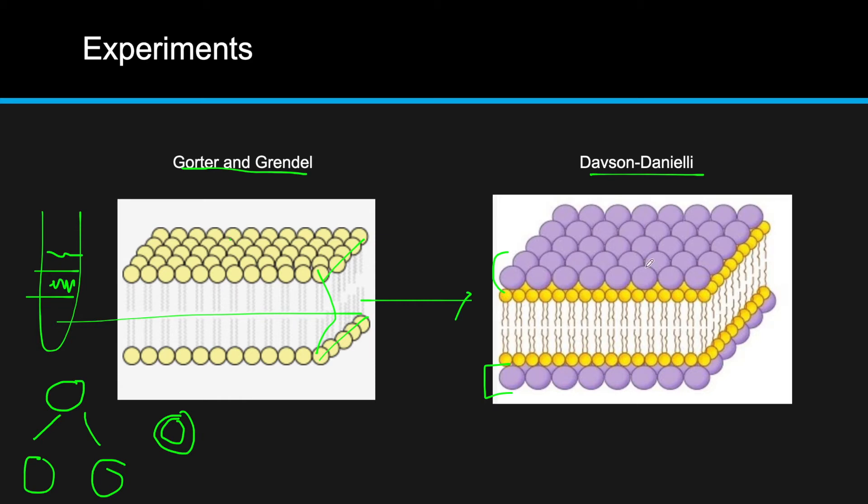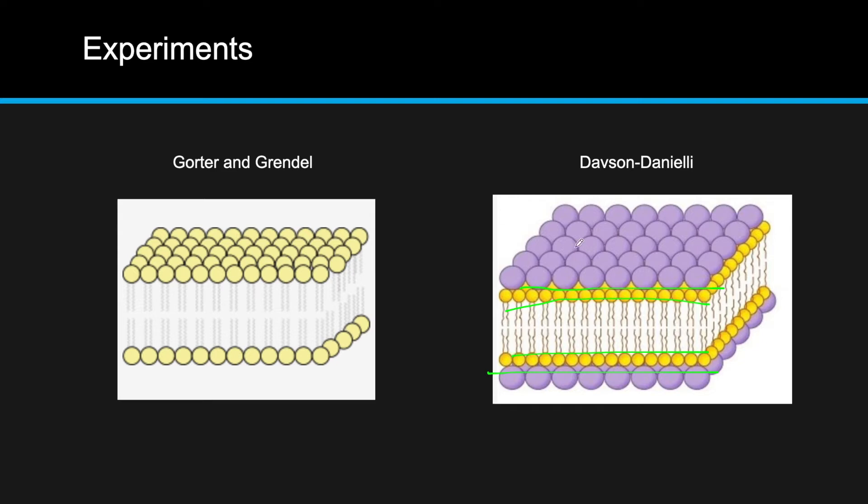Their explanation for this was when you take an electromicrograph of a cell membrane, you're seeing these two dark layers and this lighter layer in between. What they took that as was let's put these as proteins and this middle part is the phospholipid bilayer. What they didn't know is those dark lines were actually just the phospholipid heads, and they mistook the simple bilayer as four layers of different molecules.